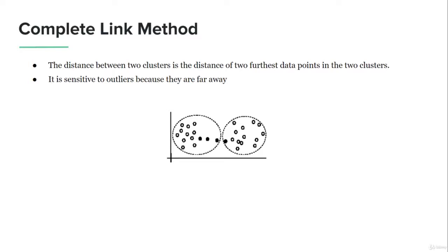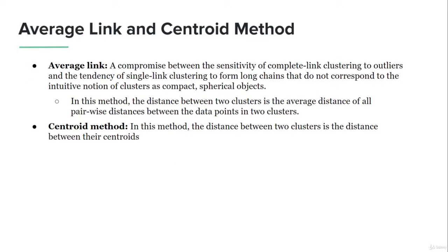To overcome these problems, we use the average link and centroid methods. The average link method compromises between the sensitivity of complete link clustering and the chaining tendency of single link clustering. It averages the distances of all pairwise distances between the data points in two clusters — it pairs data points from different clusters and takes the average of all pairwise distances, giving a better result than both single link and complete link.